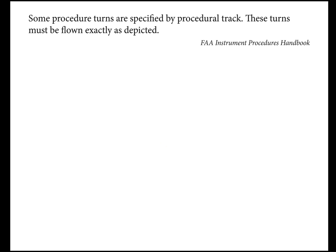All you find in the FAA Instrument Procedures Handbook on a teardrop course reversal is one sentence: that you're supposed to fly certain things along their procedural track exactly as depicted. Honestly, I don't know how you're supposed to comply with that 'exactly as depicted.'